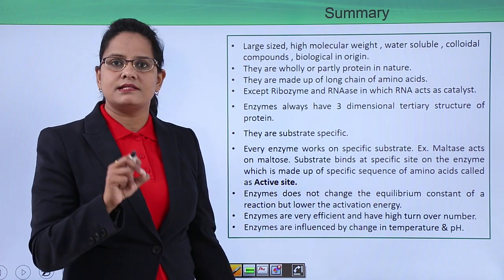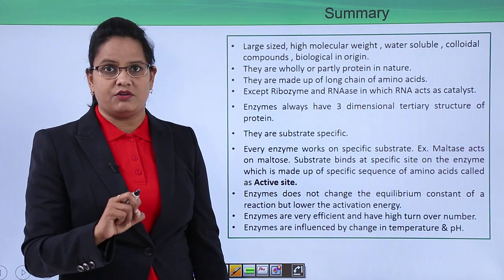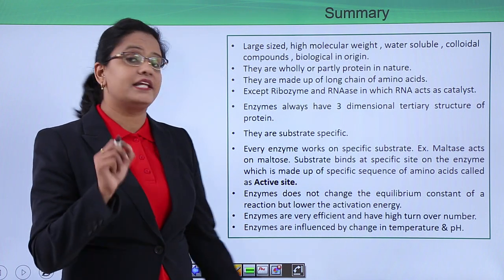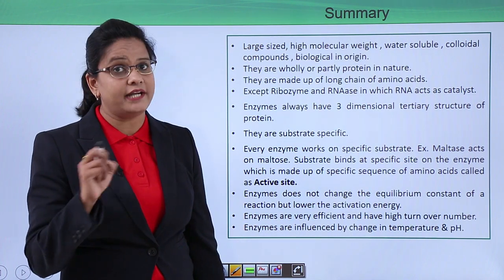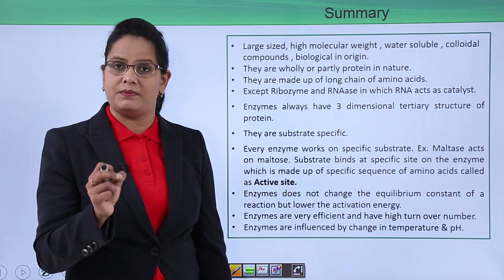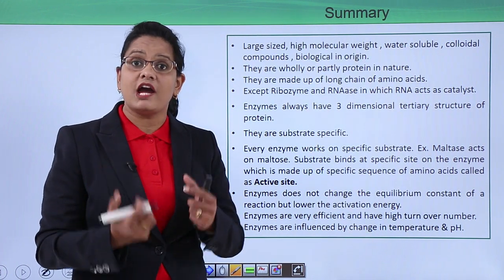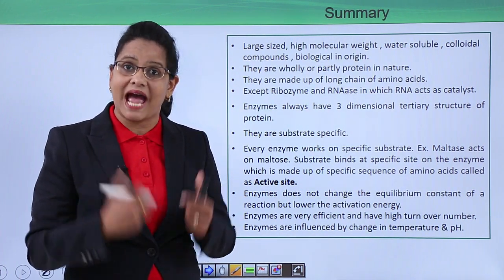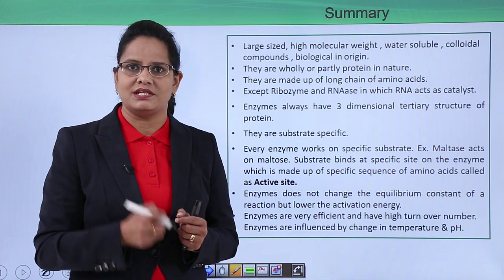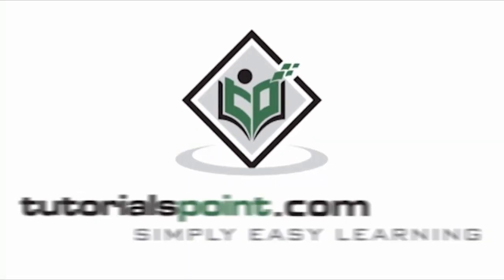For example, maltase acts on maltose. Enzymes do not change the equilibrium constant of a reaction — they simply lower the activation energy. They are very efficient with a high turnover number and are very specific to temperature and pH. This was all about the properties and characteristics of enzymes. In upcoming videos, we will learn about the mechanism of action of enzymes. Thank you very much — TutorialsPoint, Simply Easy Learning.